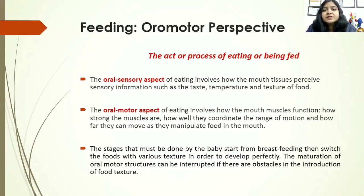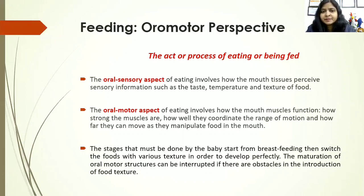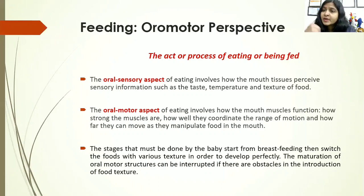Talking of feeding — feeding is the act or process of eating or being fed. We see feeding from two perspectives: oral sensory and oral motor. The oral sensory aspect involves how the mouth tissues perceive food — the taste, temperature, and texture of the food — as well as the sensory aspect of smell and sight: how the food is looking, what is the color, what is the smell. These factors all affect the sensory part of feeding. The oral motor aspect of feeding involves how the mouth muscles function — how strong they are, how well they coordinate, whether food is going in the right direction, whether the child is able to transfer, manipulate, and swallow food properly.